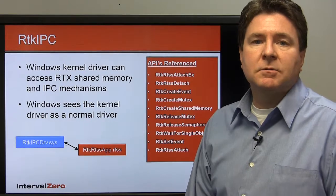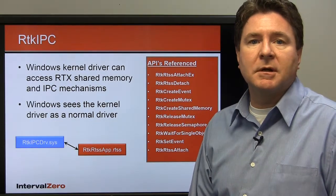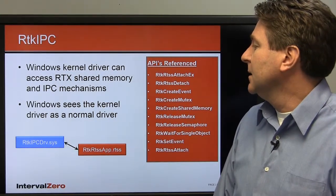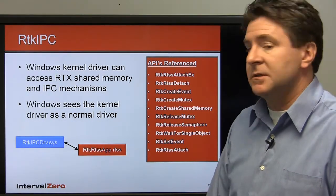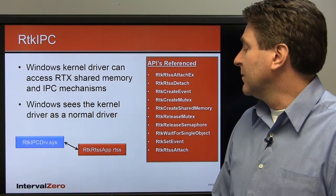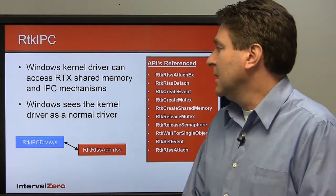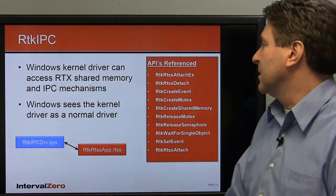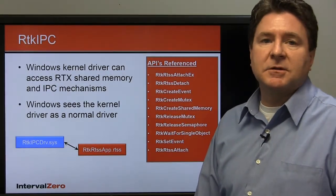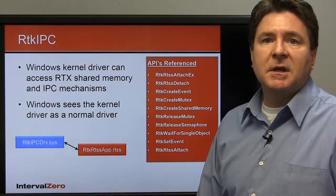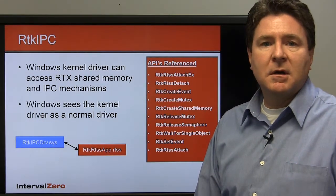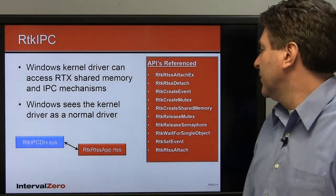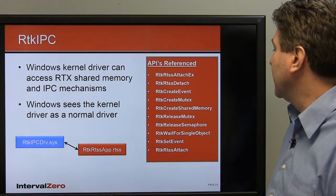The next sample is the RTK-IPC. This one does a lot the same as the previous sample to demonstrate sharing data between two processes, but here the Windows process is actually a kernel driver. The RTK-IPC driver .sys runs in the Windows kernel space and appears to Windows as a normal Windows driver. The real-time process is the RTK-RTSS app. The first API is the RTK-RTSS attach and detach function, required because one process runs in the Windows kernel. This example also shows mutexes to protect memory and semaphores to do signaling, using wait for single object.